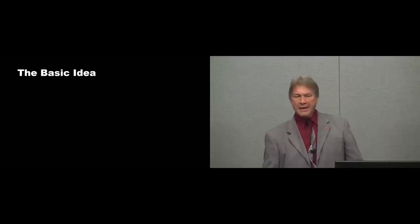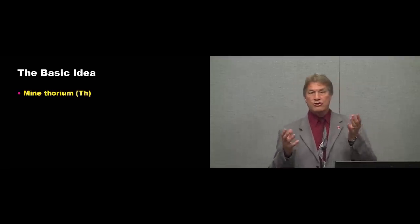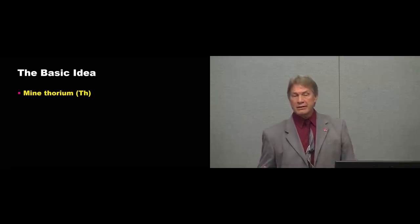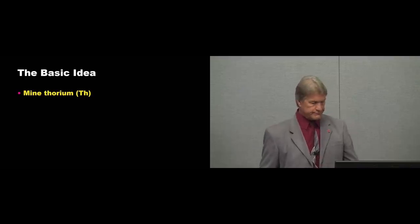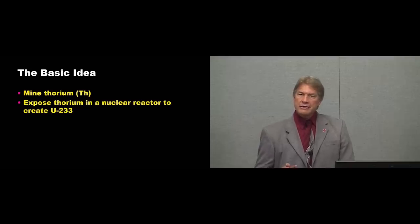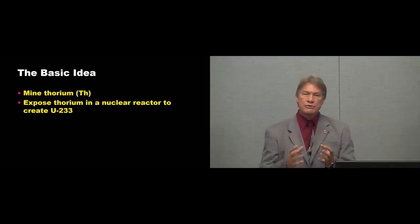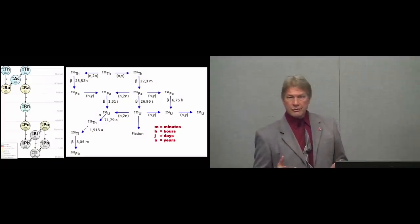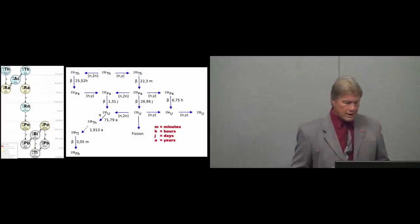Here's the basic idea. We mine thorium, an element in the ground that's slightly radioactive, meaning an extremely long half-life of many billions of years. We then expose the thorium in a nuclear reactor to create U-233. Thorium isn't the fissile thing that's splitting up. We have to make uranium-233 first. How do you do that? Well, let me show you on this chart.